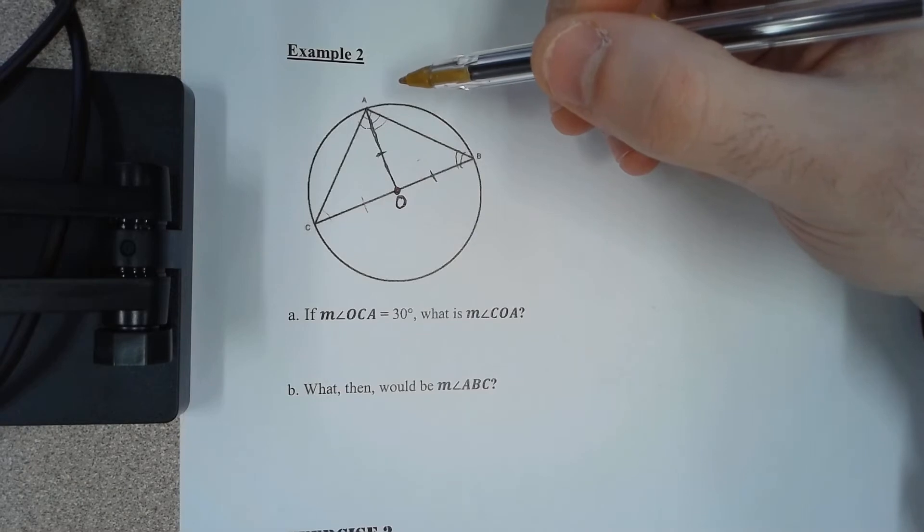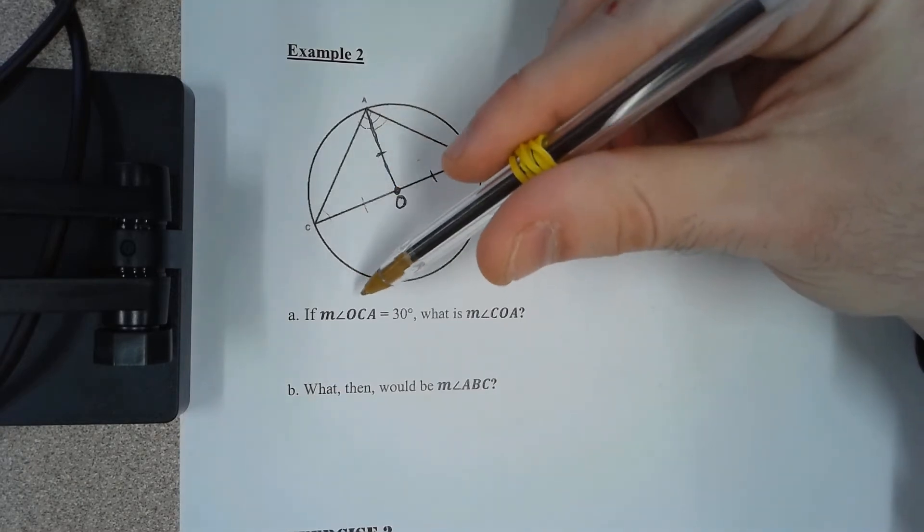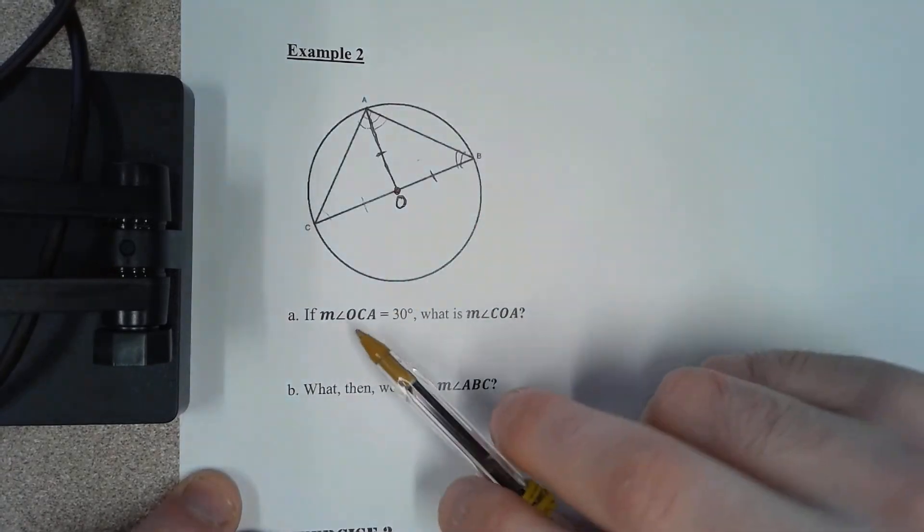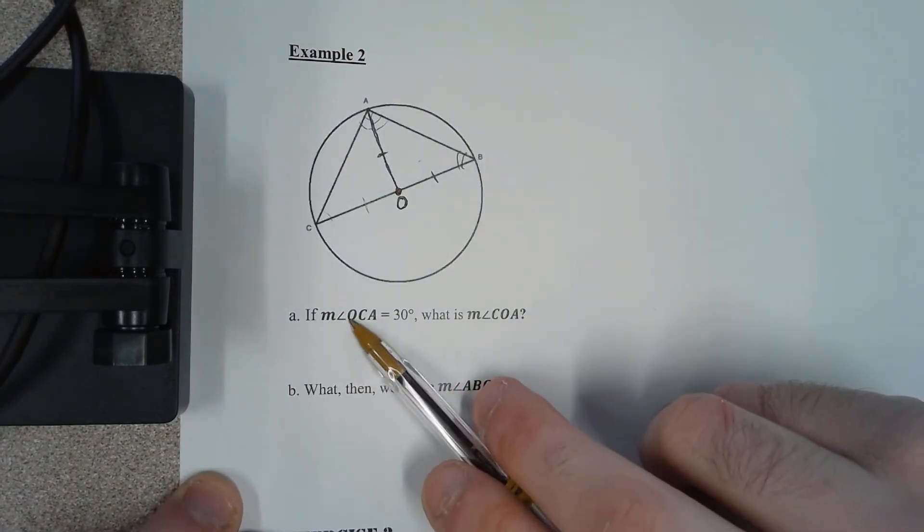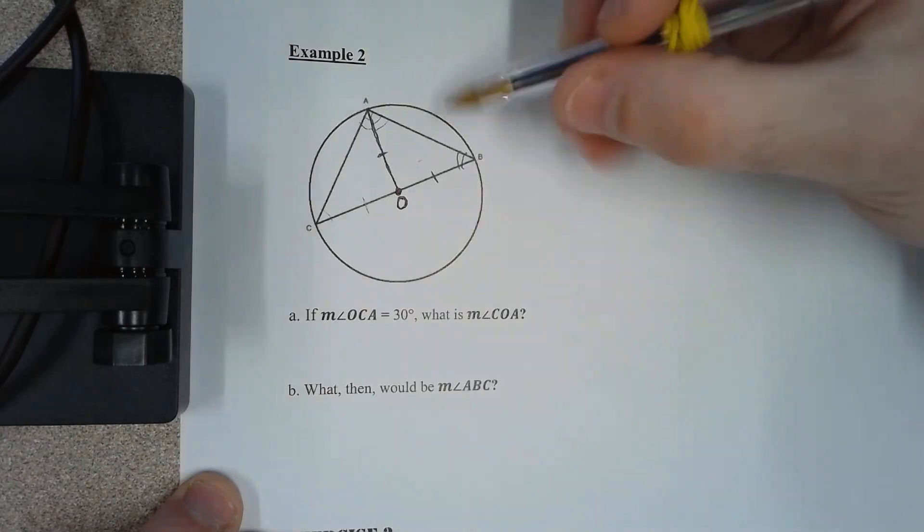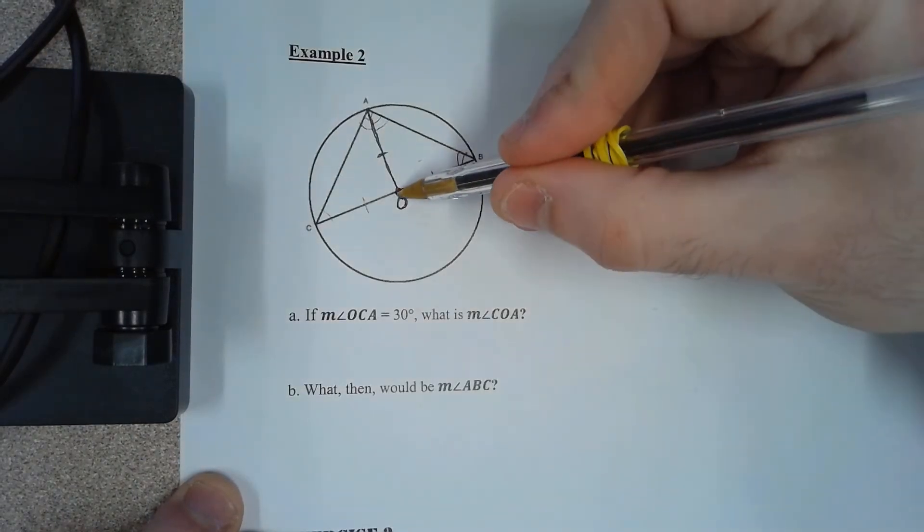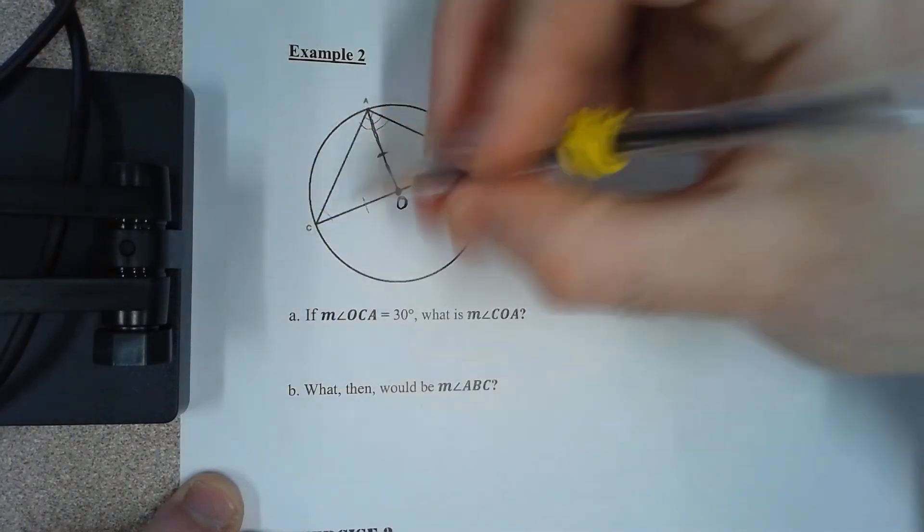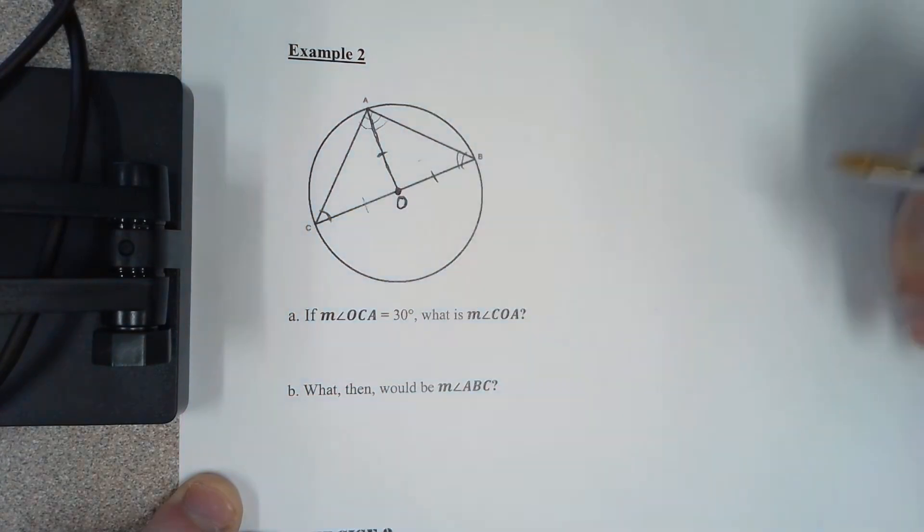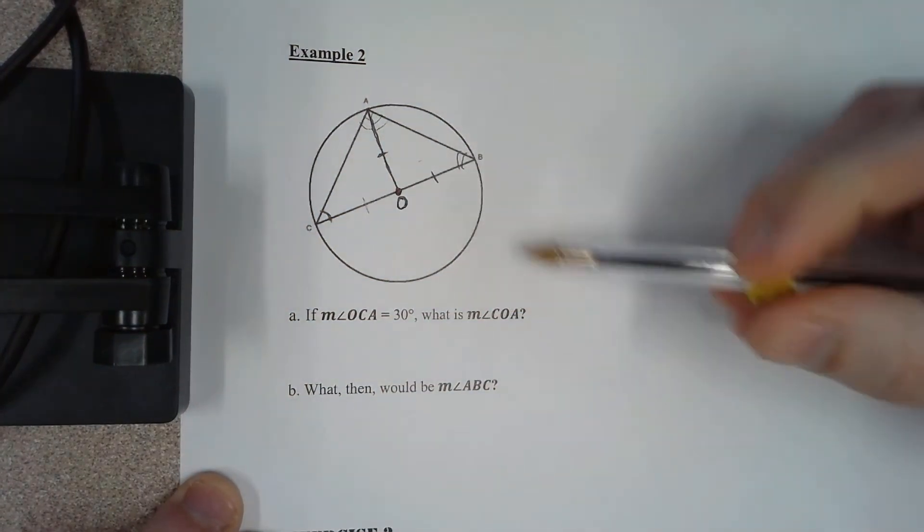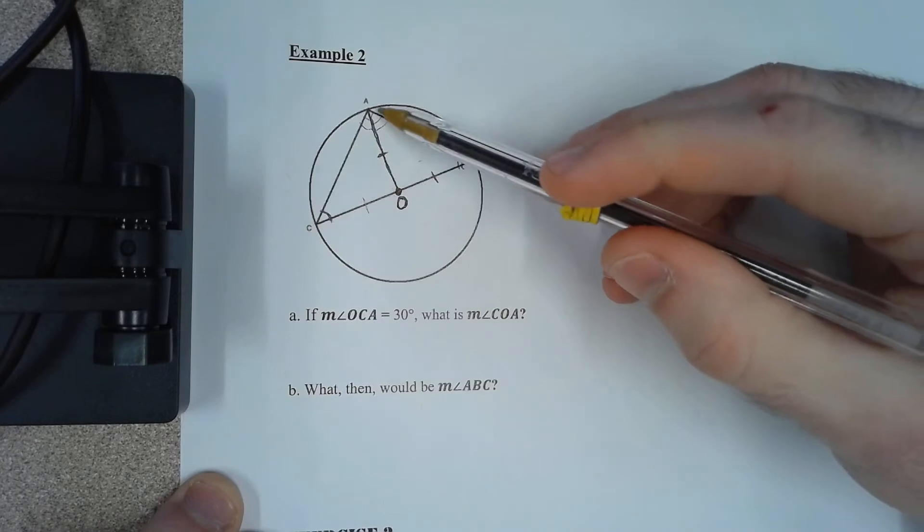So we're combining the different things that we've learned. If the measure of angle OCA is 30 degrees, if this angle right here is 30 degrees, what is the measure of COA?